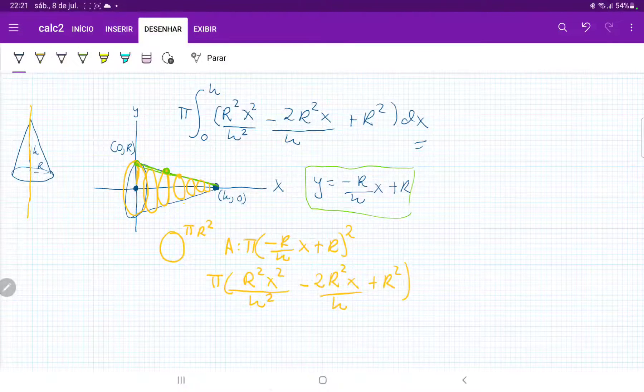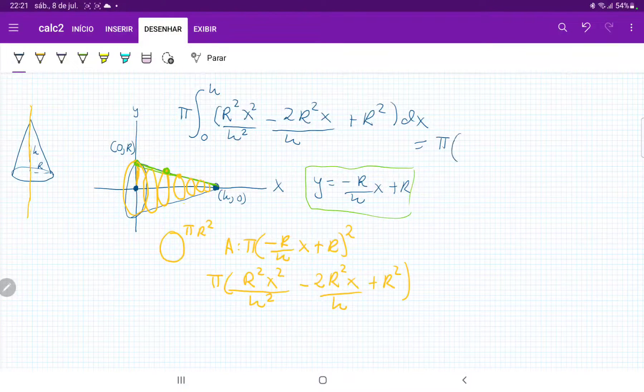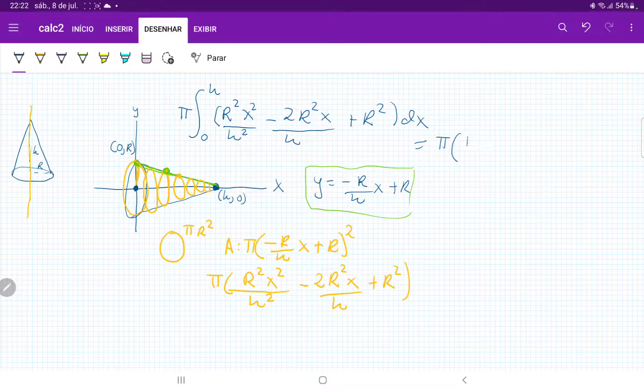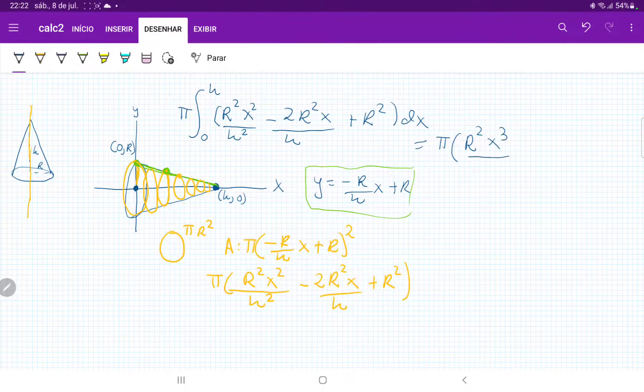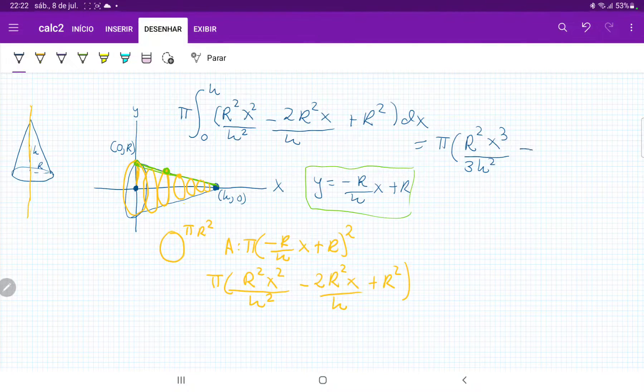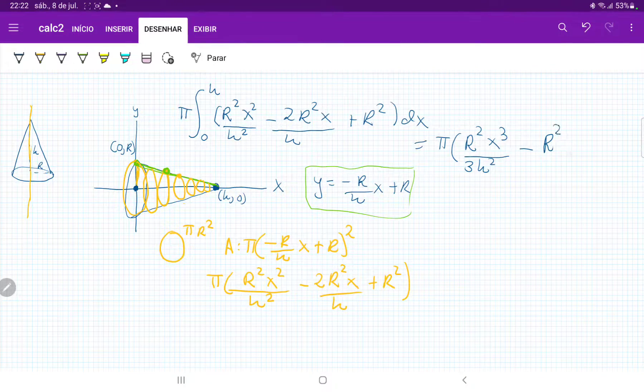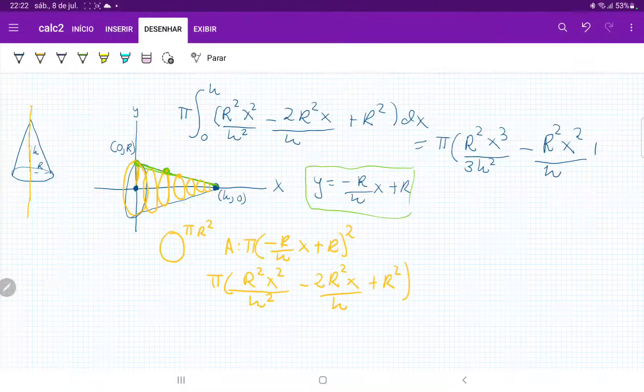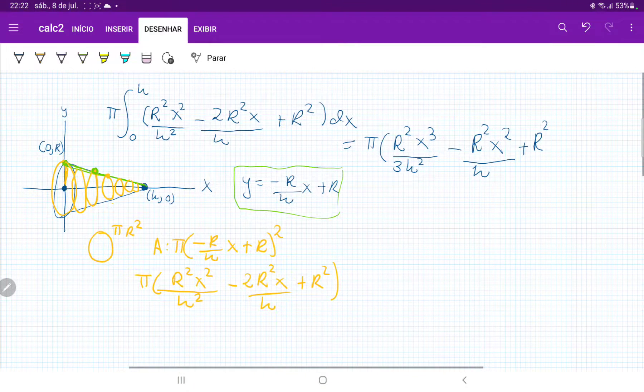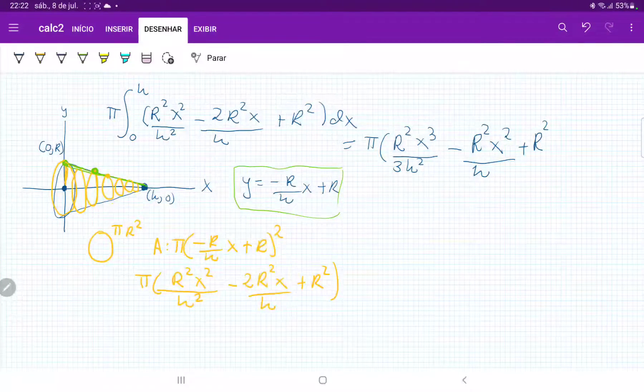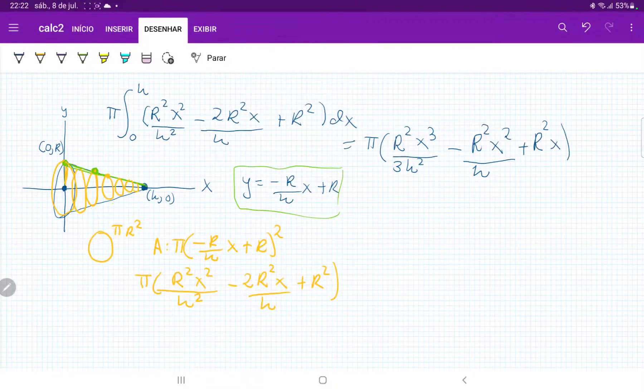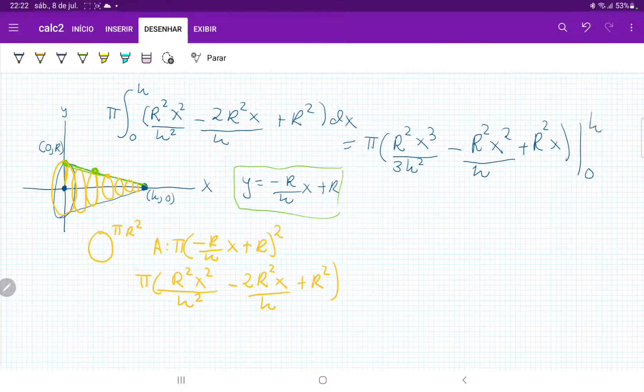and the result of this is, let's see, pi, that's a constant outside. On the other side, we have r squared x cubed over 3h squared minus, the 2 is going to cancel with the x squared over 2, minus r squared x squared over h plus r squared x,